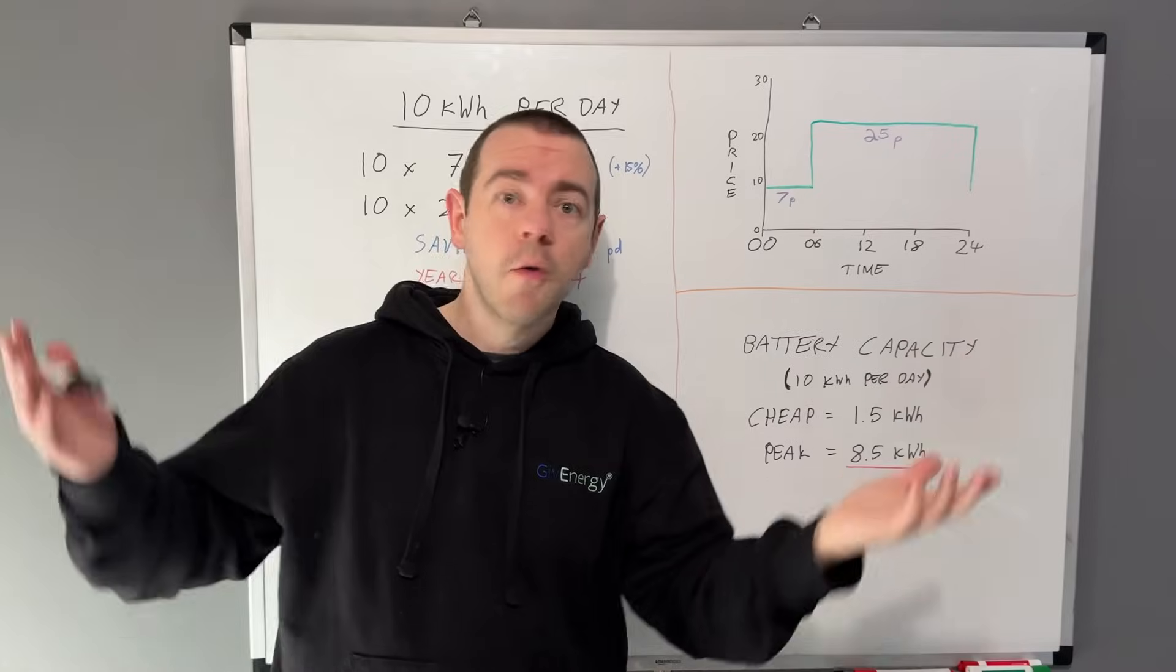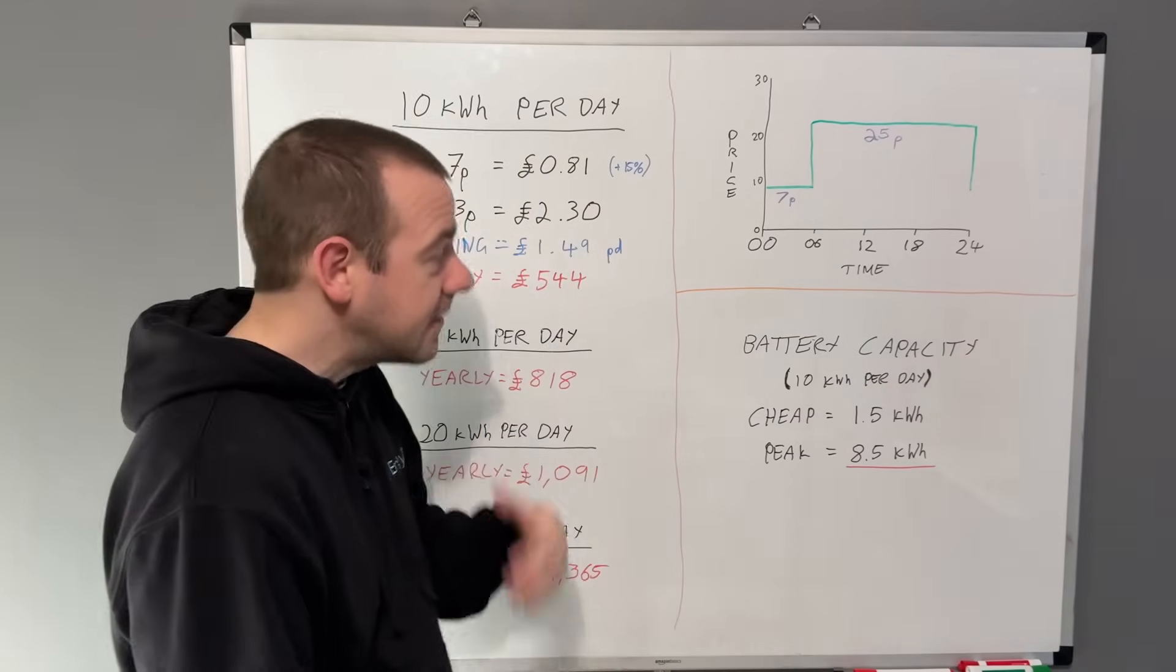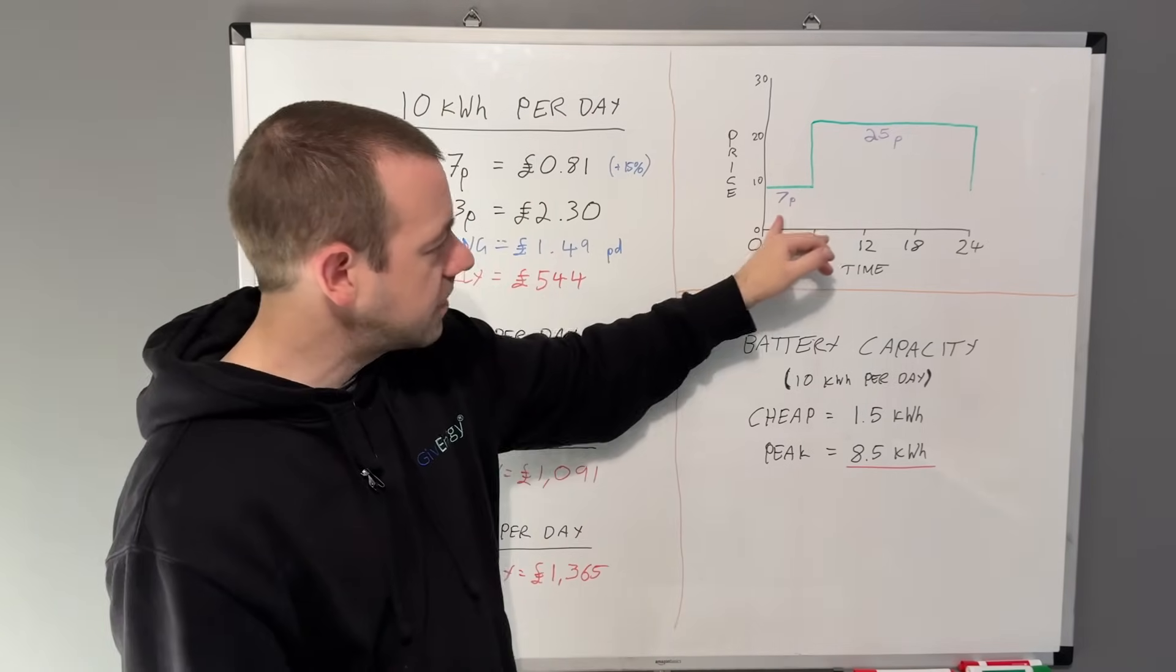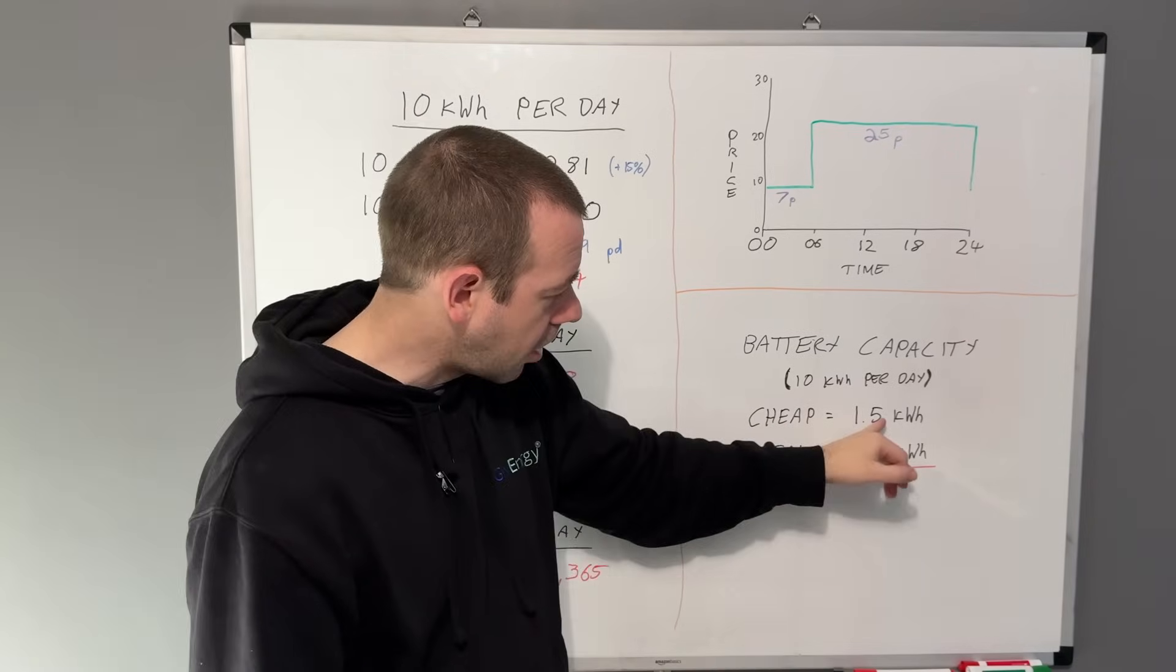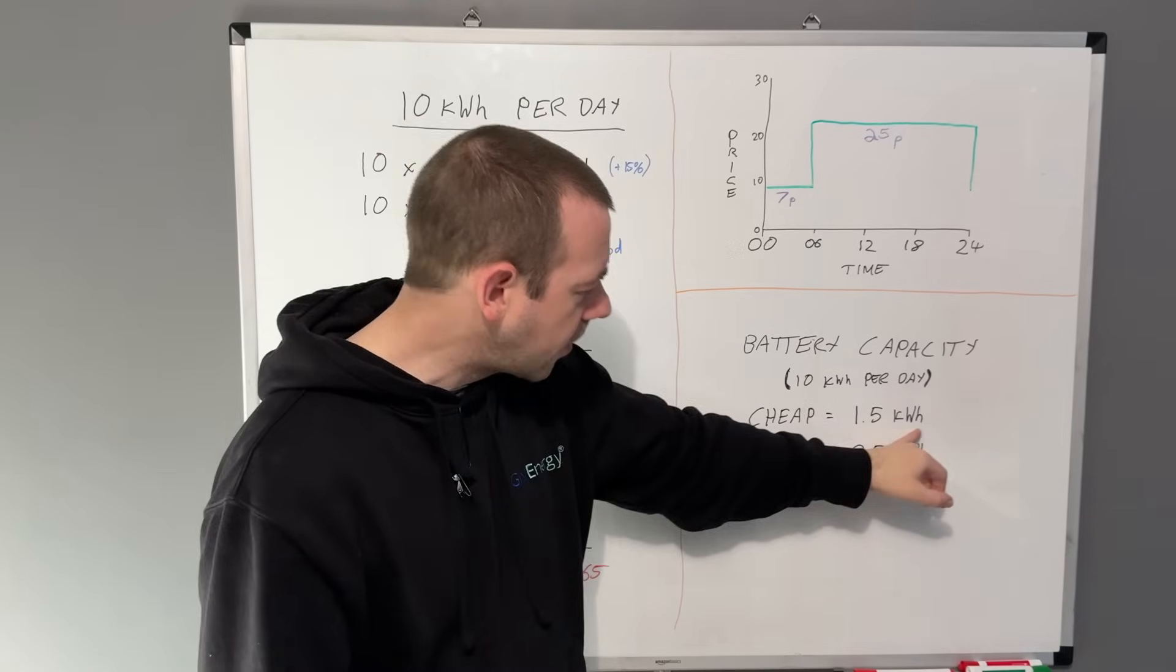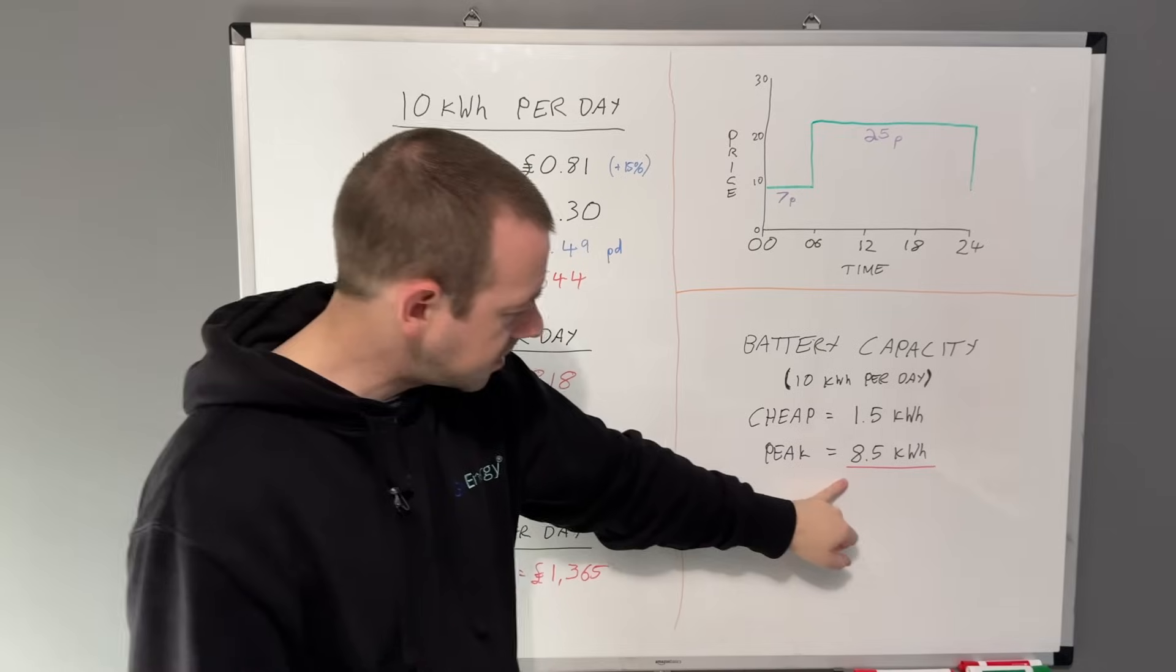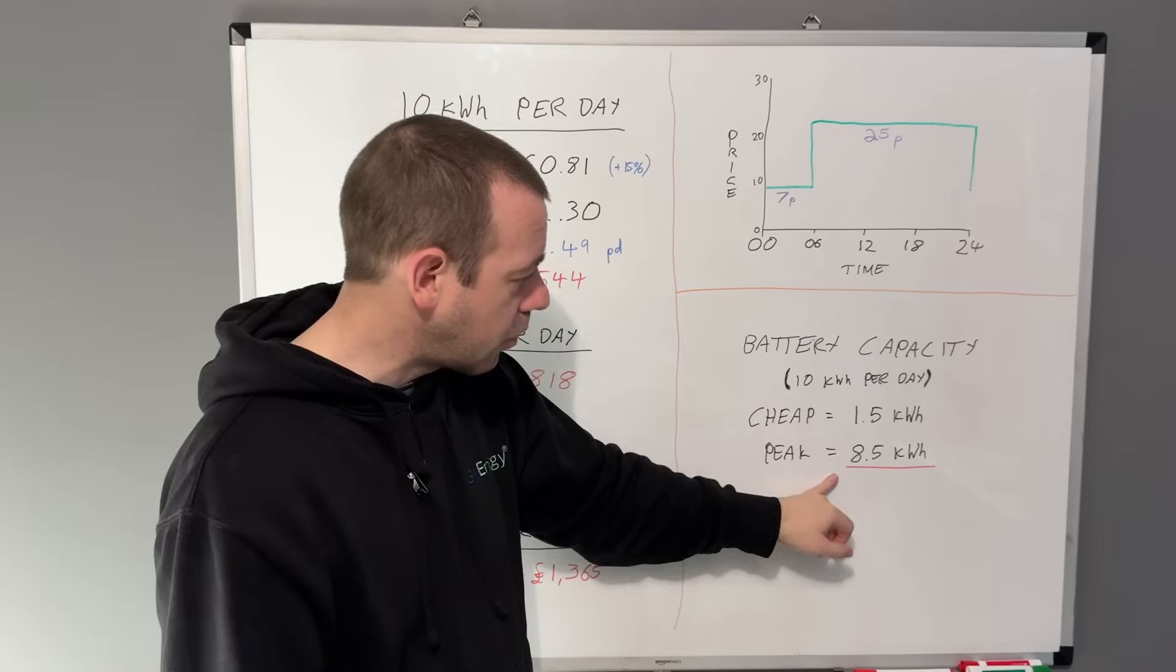You've still got things on—the fridge, the freezers. And if you load shift as well, if you put your dishwasher or washing machine on a timer so they run during the nighttime cheap period, this could be a lot higher. But I've roughly guesstimated that you would use at least 1.5 kilowatt hours during the cheap window when the battery's charging up, which means your battery only has to power 8.5 kilowatt hours.